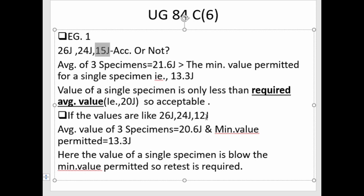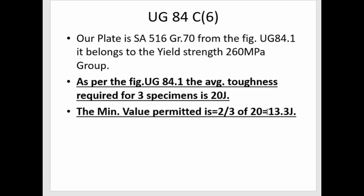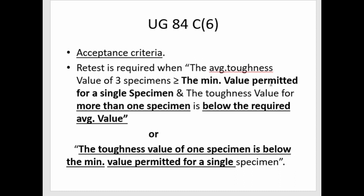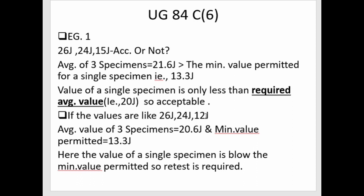In Example 2, we have three values: 26 J, 24 J, and 12 J. The average is (26 + 24 + 12) / 3 = 20.6 J, which is greater than the minimum value permitted of 13.3 J. However, the toughness value of one specimen — 12 J — is less than the minimum value permitted for a single specimen of 13.3 J. Therefore, these values are not acceptable and a retest must be performed.